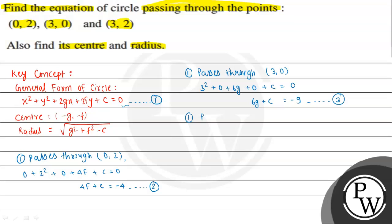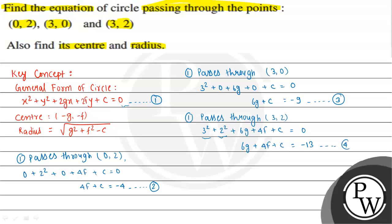Similarly, when equation 1 passes through point (3,0), we substitute x = 3 and y = 0: 3² + 0 + 6g + 0 + c = 0, giving 6g + c = -9. We consider this as equation 3. When equation 1 passes through point (3,2), substituting x = 3 and y = 2 gives 3² + 2² + 6g + 4f + c = 0, so 6g + 4f + c = -13. We consider this as equation 4.